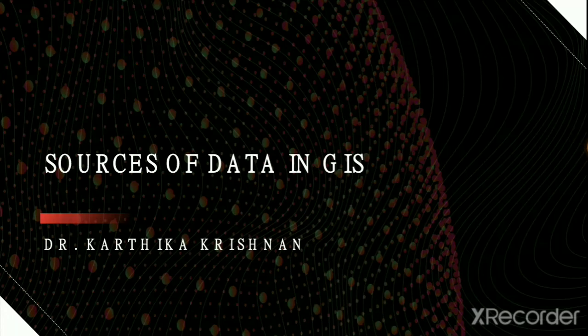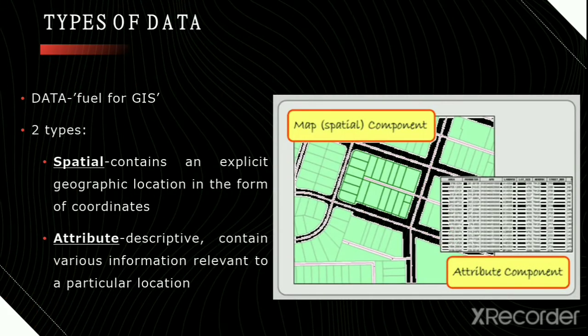Hello everyone, welcome back to our GIS classes. In the previous session we were discussing the types of data used in GIS and their characteristic features. Today let's look into the major sources from which GIS will receive this data. As we already discussed, data is the major fuel for GIS. We have two major types: spatial data, which is referenced to a location on the surface of the earth, and attribute data, which supports spatial data with additional information.